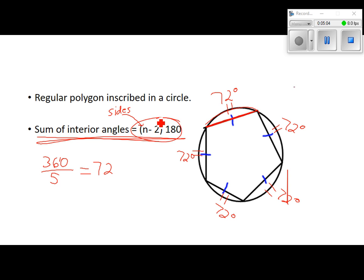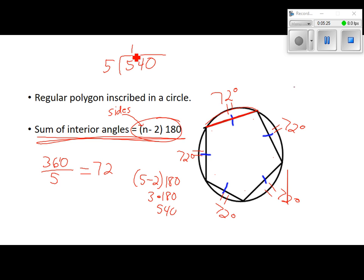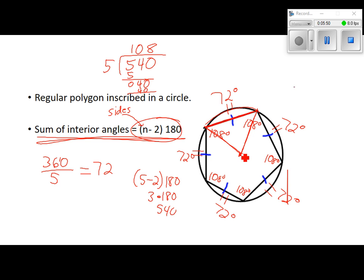Using the formula (5 − 2) × 180, that's 3 × 180 = 540. That means all the interior angles add up to 540 degrees. Since they're all the same, we take 540 divided by 5, and each interior angle is 108 degrees. Once we have that, there's all kinds of stuff we could do. If we draw radii from the center to the vertices, those are all congruent to each other, and all kinds of different things follow from that.